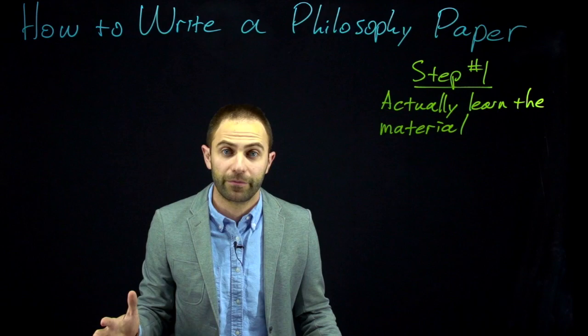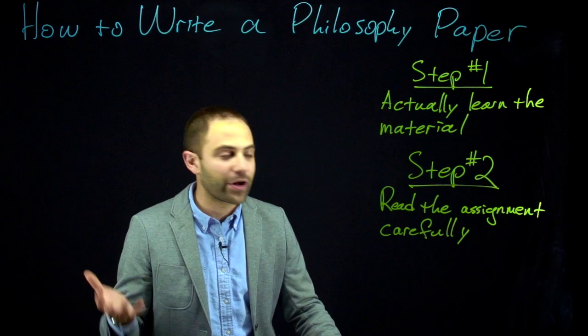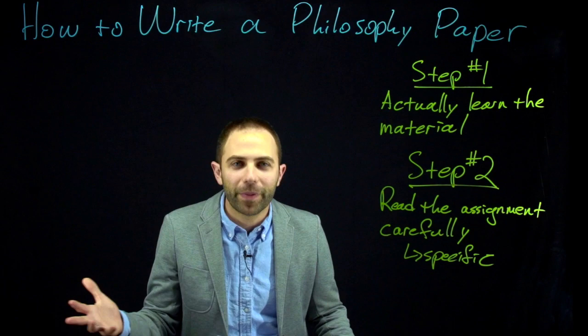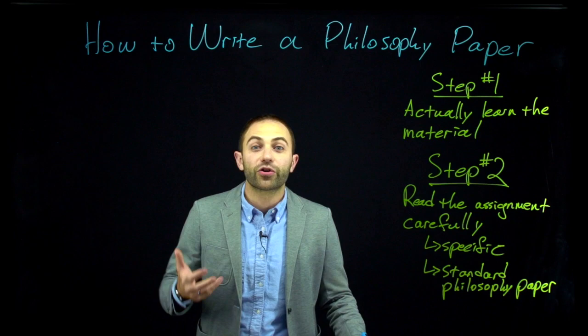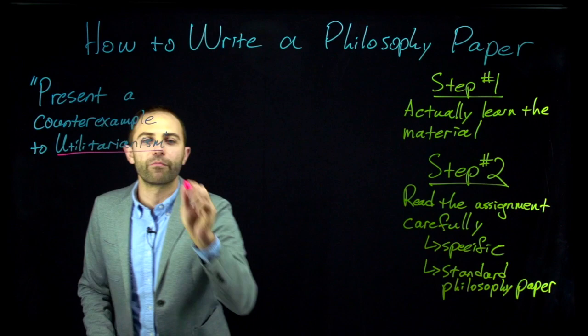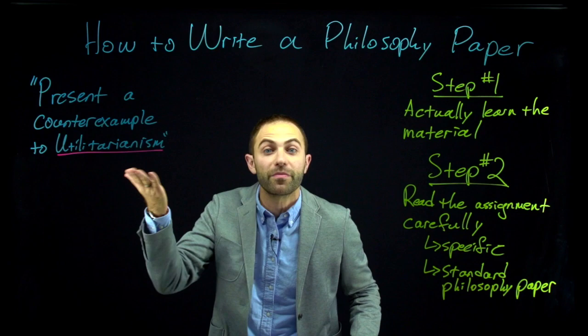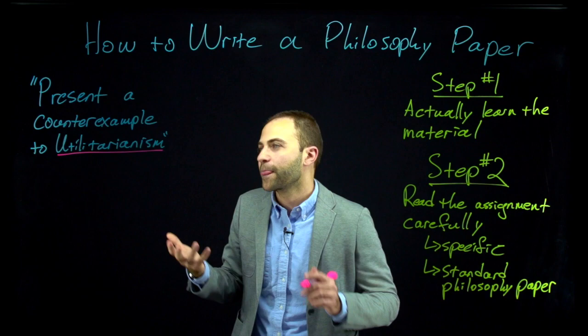Step two: read the assignment very carefully. There are basically two types of paper assignments in an undergraduate philosophy course. You'll get specific ones, or you'll get a generic open-ended one that asks you to write what I'm going to call a standard philosophy paper. Let's start with the specific one. Say you're given an assignment that says: present a counterexample to utilitarianism. Utilitarianism is a moral theory — just know that it's some theory about which actions are morally good or bad. The assignment asks you to give a counterexample.